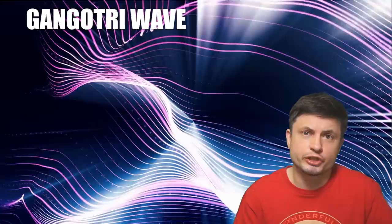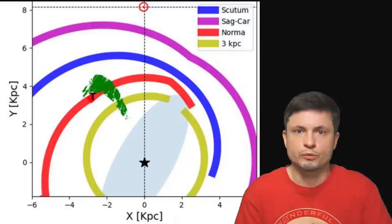And they name this wave Gangotri wave, which is the name of the glacier that's responsible for providing pretty much all of the water in the biggest river in India, the Ganges River. With this being a pretty long wave as well.